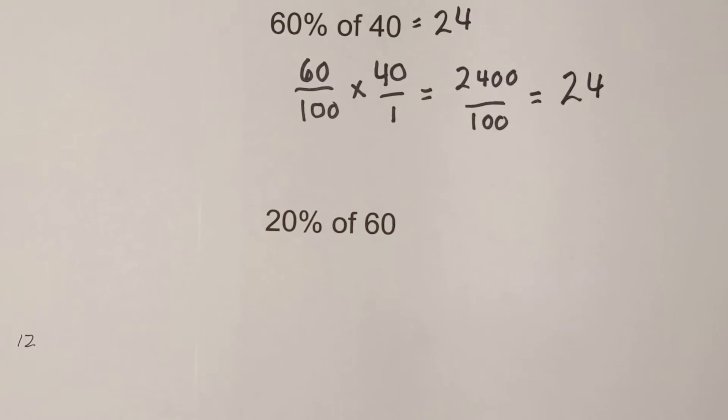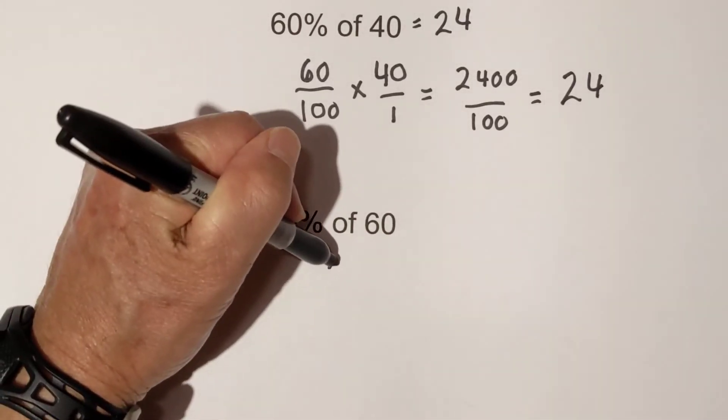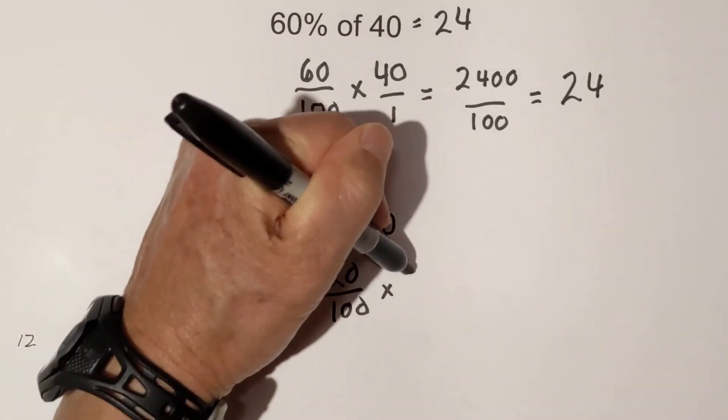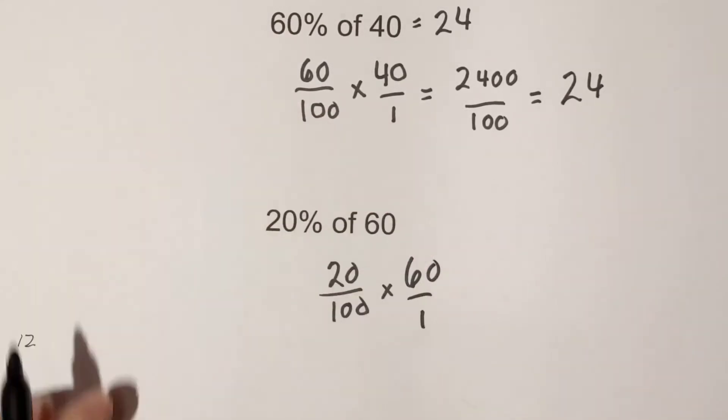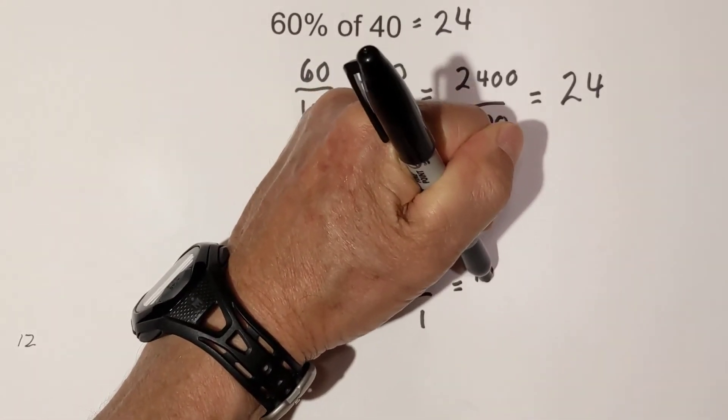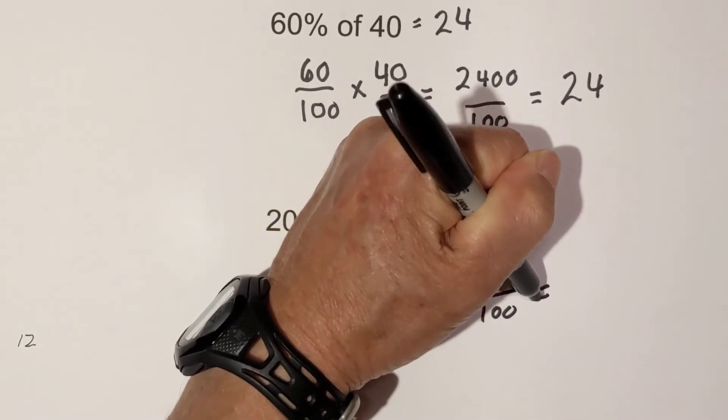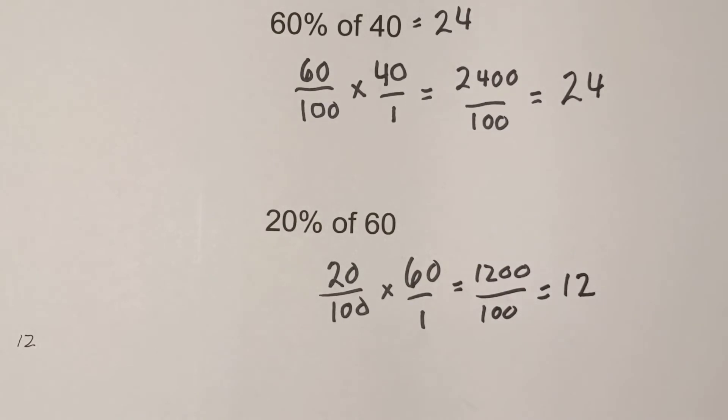Okay let's work the next one. 20% of 60. I'm going to rewrite 20% as 20 over 100 times 60 over 1. 60 times 20 equals 1200 and 100 times 1 is 100 and that equals 12. Pretty simple.